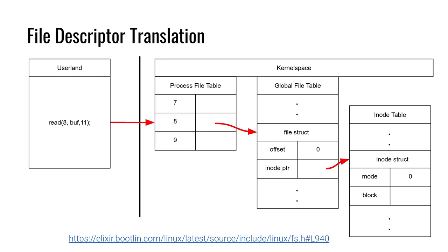The file struct inside the global file table is kind of the kernel's representation of the file. It's going to have information like the path name, as well as the offset into the file. The offset keeps track of where into the file we are currently accessing — so if a process calls read and then calls read again, the second read will continue from where the first one ended.